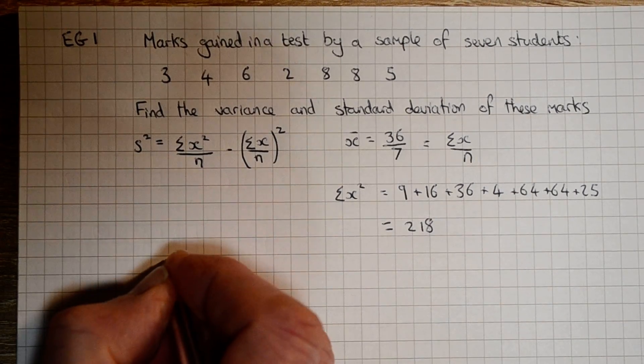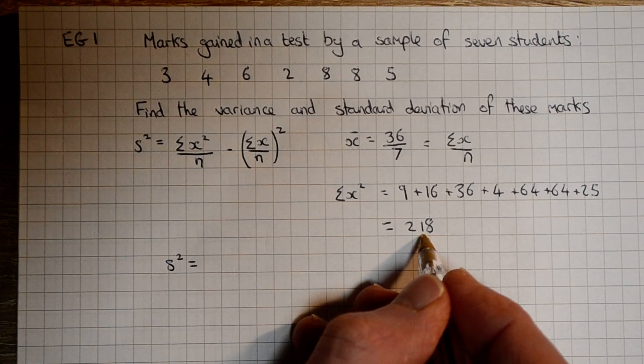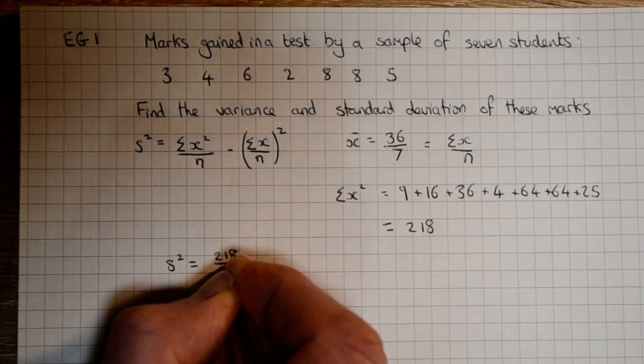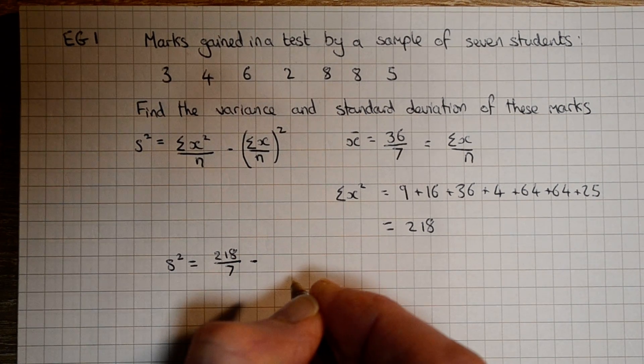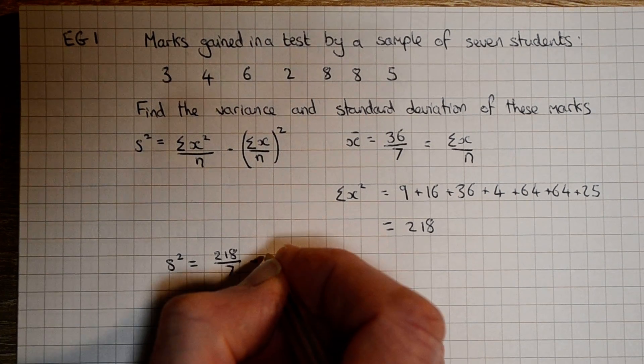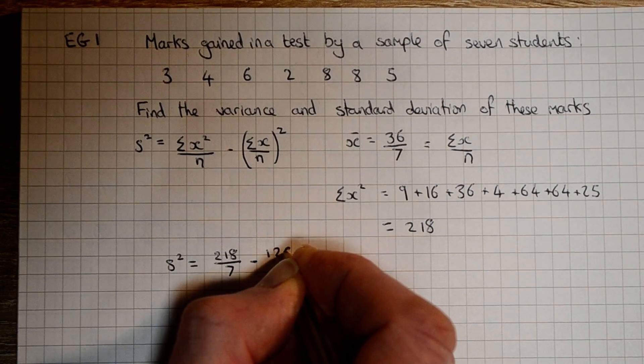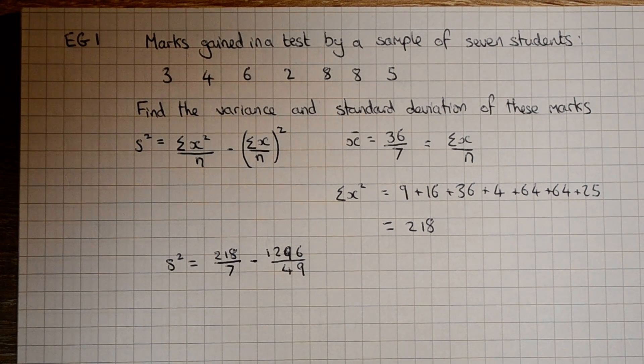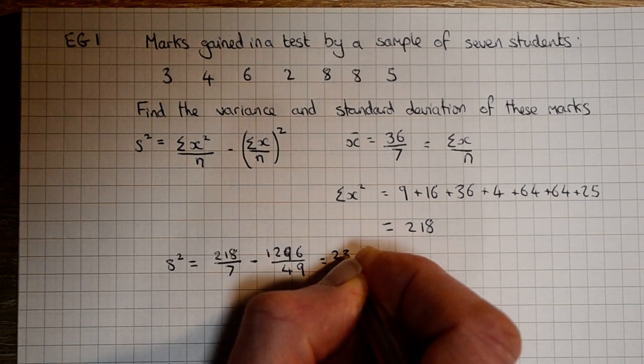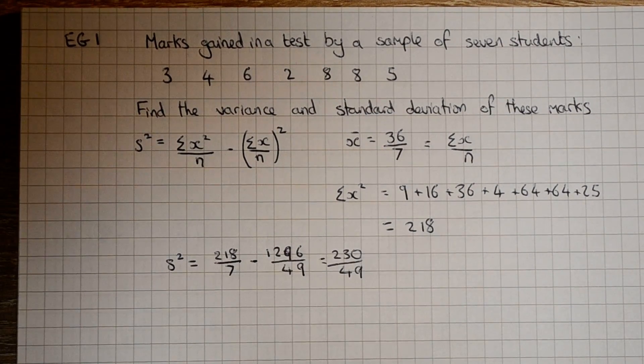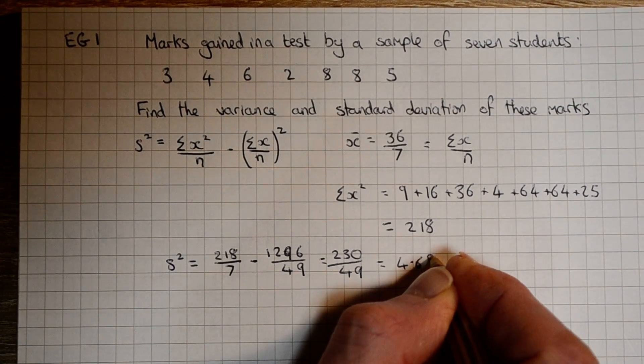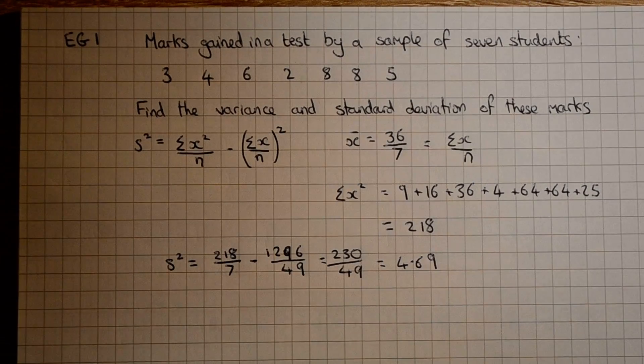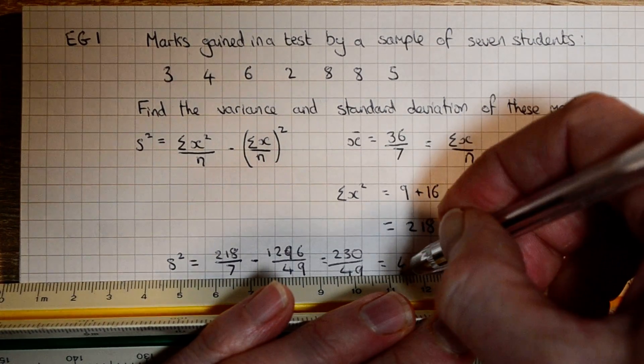We can now find our variance. So our sum of x squared over n, subtract the mean squared. That's 1296 over 49, and that equals 230 over 49, which equals 4.69 to 3 sig figs. So that's the variance.